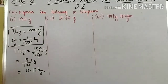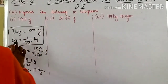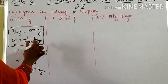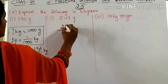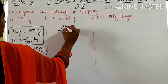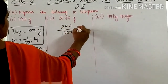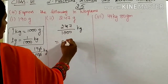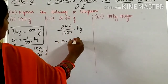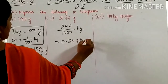Coming to here: 247 grams. Same approach — 1 gram is 1/1000 kg. So 247 grams is nothing but 247/1000 kg. In the denominator, 3 zeros are there. So 0.247 kg is the answer.